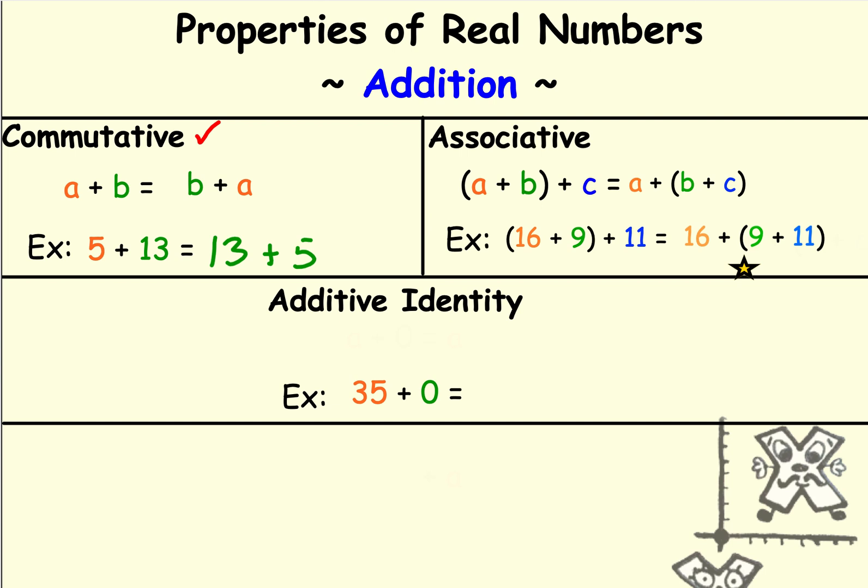So the last property for addition that we're talking about is what we call the additive identity property. Let's look at our example first. Let's say we were adding 35 to 0. Well, 35 plus 0 is 35. So what it means is that when I added 0 to the number 35, I ended up with what I started with. In other words, I didn't change the identity of the number I started with. So what the additive identity property says is that when I take a number and I add 0 to it, I end up with exactly what I started with. So the number 0 is considered to be the additive identity. I can add 0 to any number and I still end up with the same number I started with, no matter how big or how small.